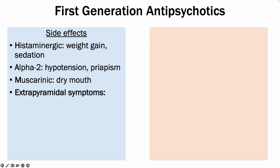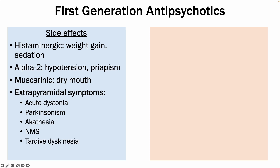They can also cause extrapyramidal symptoms — there is a video on that on my channel — but those include acute dystonia, Parkinsonism, akathisia, neuroleptic malignant syndrome, and tardive dyskinesia.